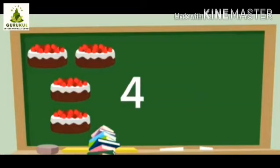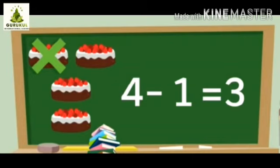Another example: there are four cakes. From four cakes we take away one cake. How many are left? 1, 2, 3 — three cakes are left. So four minus one is equal to three cakes.